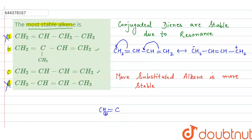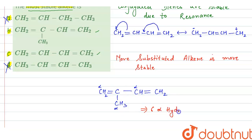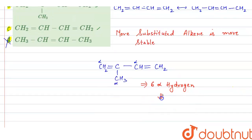If we take option B — CH2=C(CH3)-CH=CH2 — the carbons adjacent to the double bond are the alpha carbons. Counting the alpha hydrogens: two from one carbon, one from another, and three from the CH3 group — so total six alpha hydrogens. Six alpha hydrogens means there will be six hyper conjugating structures for this double bond.